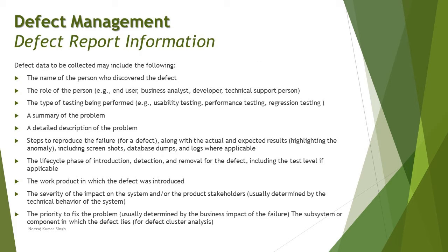Now, getting into quick definitions of each field that might be helpful to include in a defect report. An organization can have fewer or more than these, but collectively these are what a defect report can include. The name of the person who discovered the defect serves as a point of contact — at any point in time, if you want to reach out for further details or understand what exactly went wrong, you need the person who raised the defect.